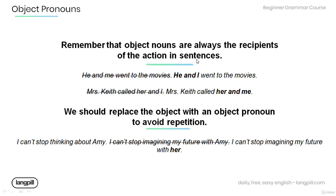Remember that object pronouns are always the recipient of the action in sentences. For example, in this sentence: 'He and me went to the movies' — this is incorrect because the object pronoun 'me' is being used as the subject of the sentence. The correct form would be: 'He and I went to the movies.'